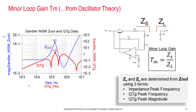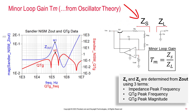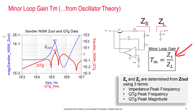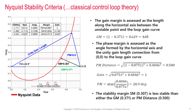NISM accurately determines the quality factor QTG of the impedance by evaluating the first derivative, or slope, of the impedance phase versus frequency. This information, along with the frequency shift between the impedance peak and the QTG peak, is used to mathematically separate the impedance into the voltage regulator's active output impedance and the fixed output capacitor impedance. With these two known, the traditional oscillator theory minor loop gain assessment is used to accurately compute the stability margin.